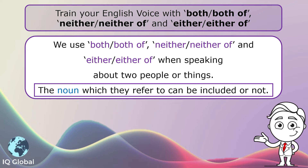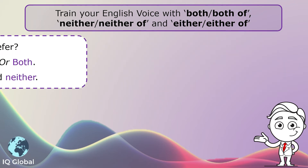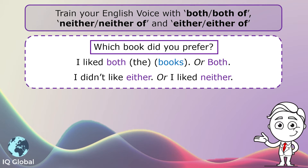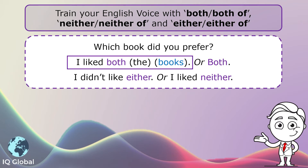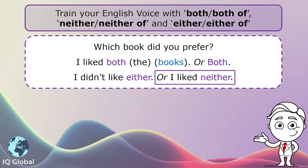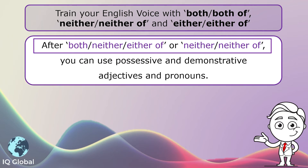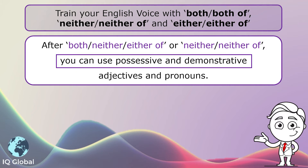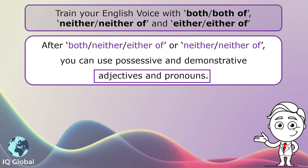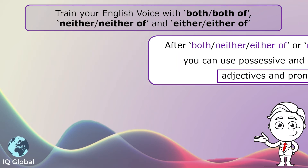The noun which they refer to can be included or not. Let's look at some examples. After both, neither, either of, or neither, neither of, you can use possessive and demonstrative adjectives and pronouns.